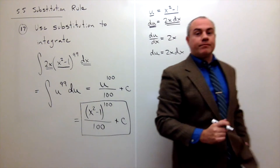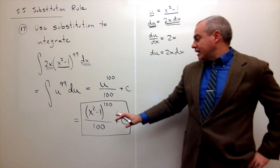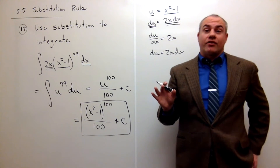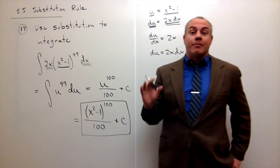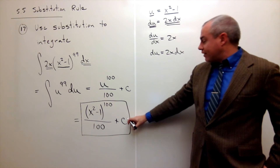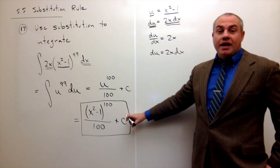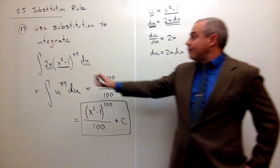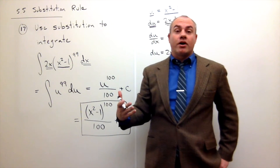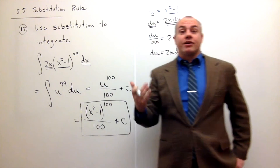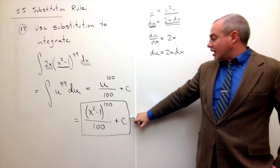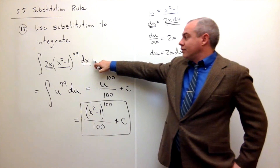If you're not confident you got the right answer, you can take the derivative of your result. If you take the derivative of x squared minus 1 to the 100th over 100 plus C, you should get back exactly what you started with. You can always check your work on these problems by taking a derivative. And there is our antiderivative for this integral.